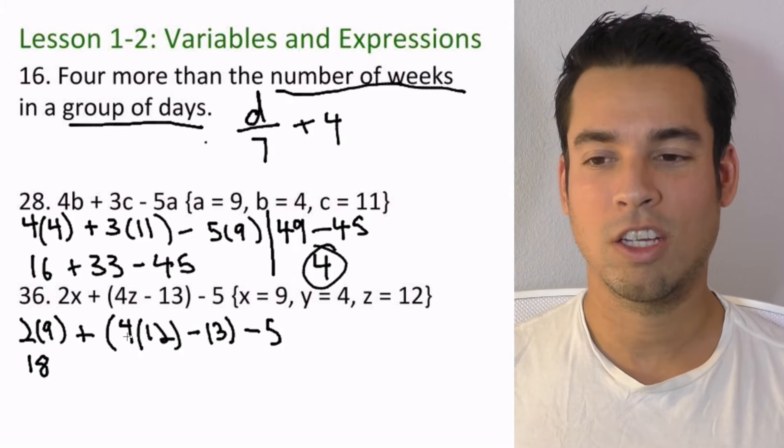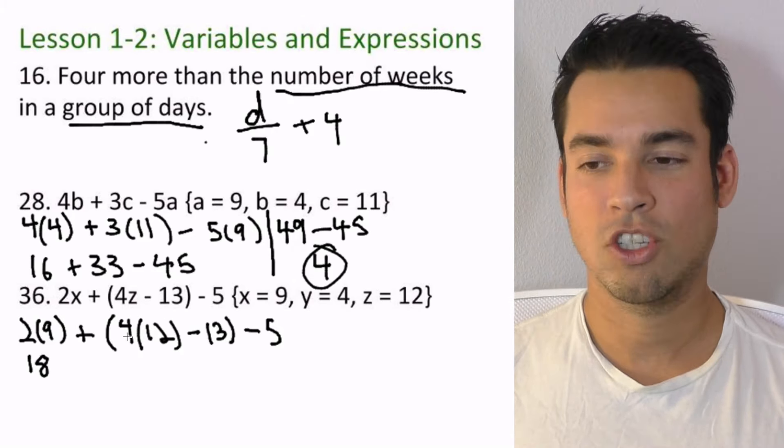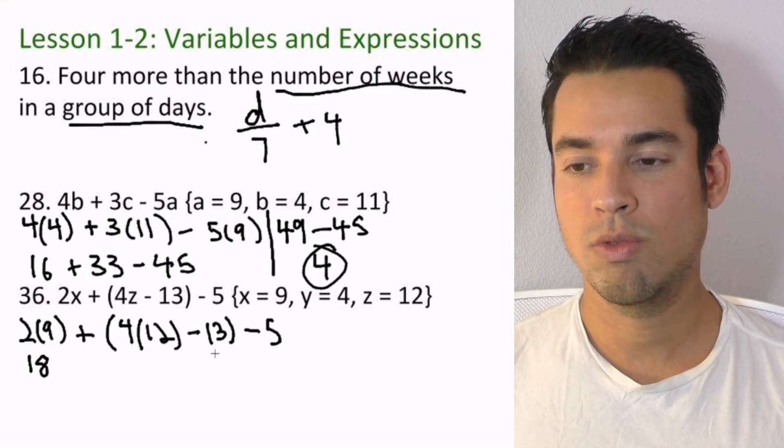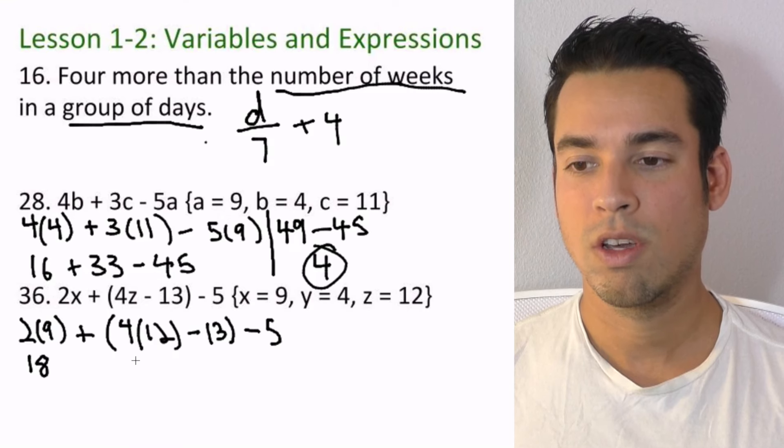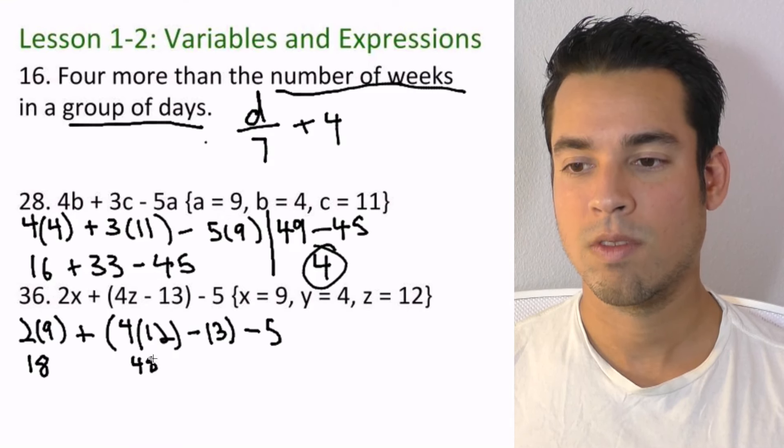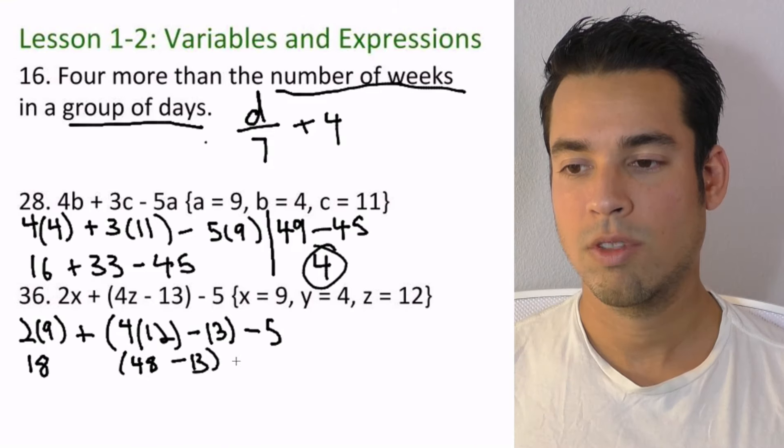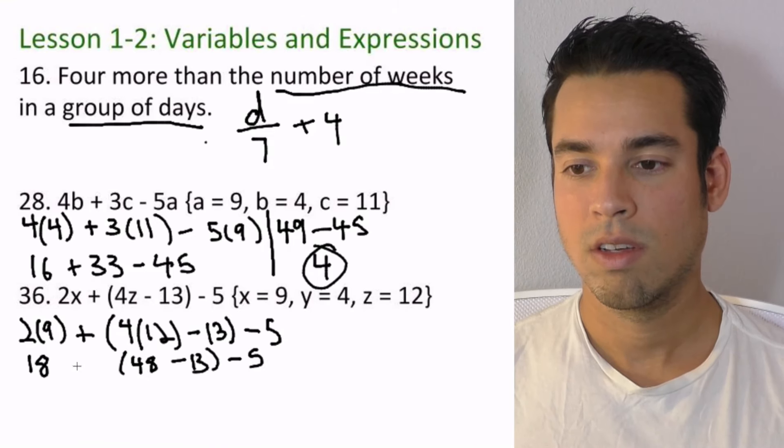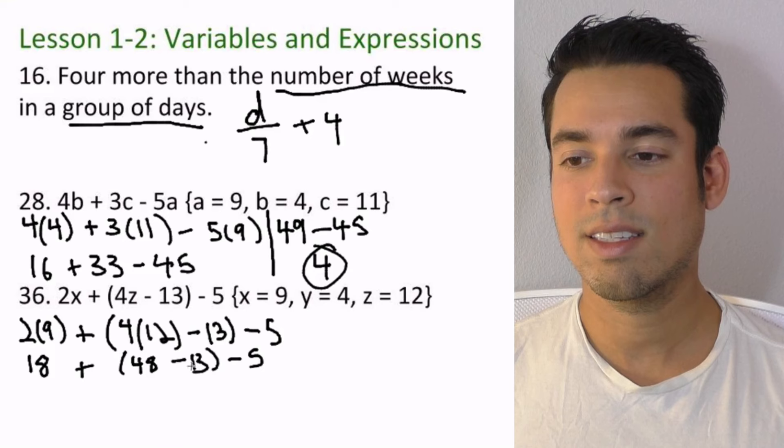So let's do this. We first got to take care of this multiplication within the parentheses. That's four times 12, which is 48, minus 13. These guys are all in here and we still got the minus five out here. So next we do this next parentheses. 48 minus 13, which is 35.